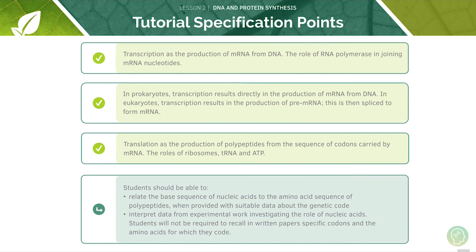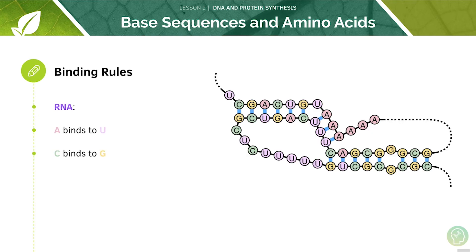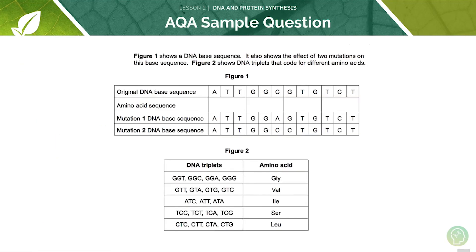Finally, we'll look at nucleic acids and their relationship to the genetic code. There are some basic base-pairing rules to remember: A binds to T and C binds to G in DNA; in RNA, A binds to U but C still binds to G. In your AQA exams you may get a question relating the base sequence of nucleic acids to the amino acid sequence of polypeptides. Remember, codons are degenerate — each of the 20 amino acids can be specified by more than one codon. For example, mutation 1 DNA sequence would still make glycine as the second amino acid, despite the change from GCC to GGA.